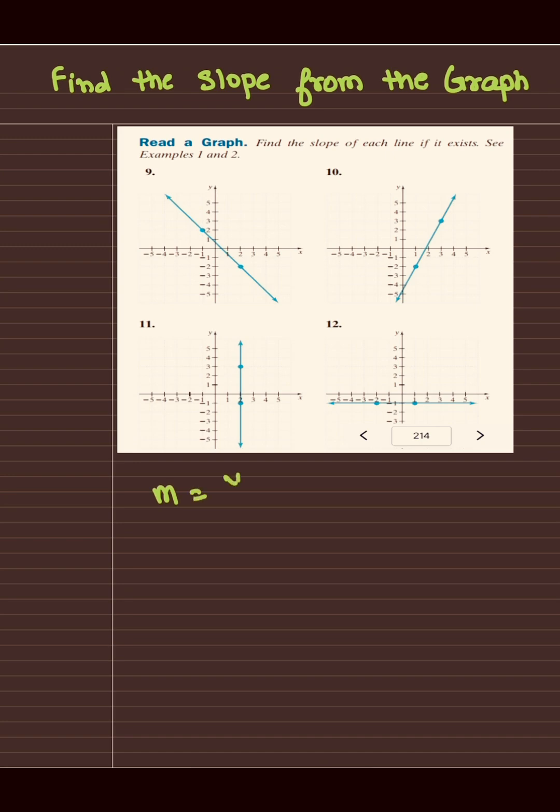The first thing we should know is the formula for the slope is m equals y2 minus y1 over x2 minus x1. Y2 minus y1 is the vertical change and x2 minus x1 is the horizontal change.